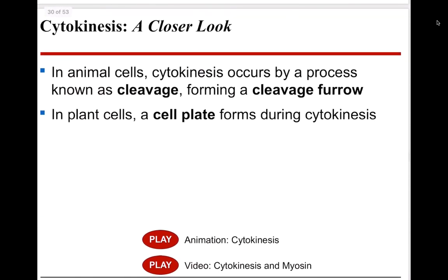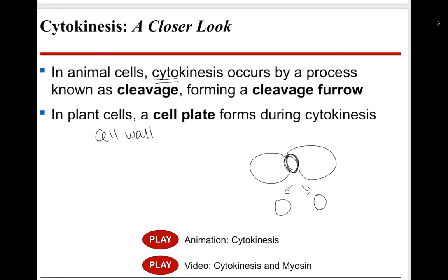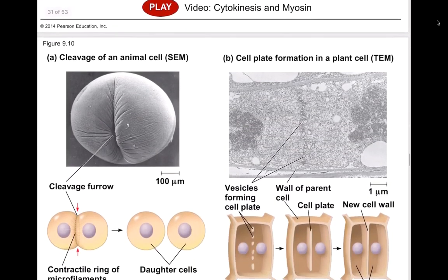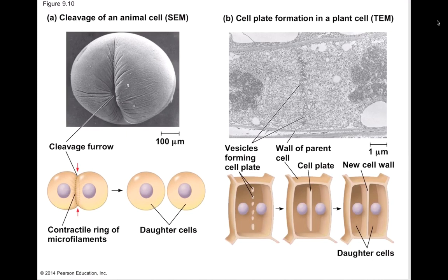Cytokinesis is the division of the cytoplasm, occurring by a process known as cleavage, forming a cleavage furrow. It's a contractile ring — when you look at a picture of it, it kind of looks like a butt. It pinches in to pinch off the cytoplasm, forming two genetically identical daughter cells. In plant cells, because they have a cell wall, you can't just pinch the cell wall. Instead, you have to rebuild a cell wall in the middle of the elongated cell — called a cell plate.